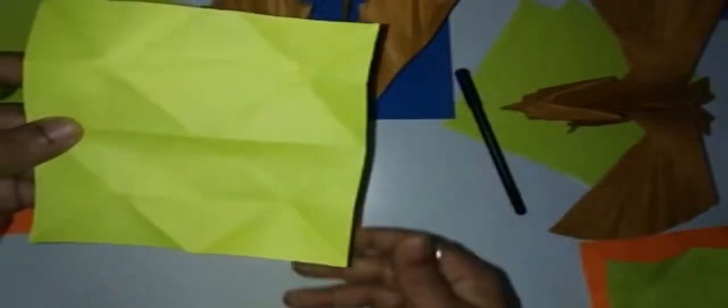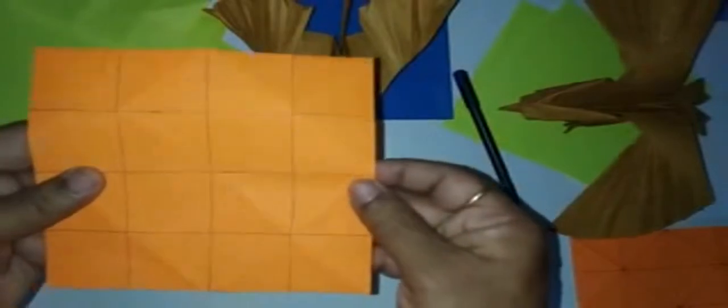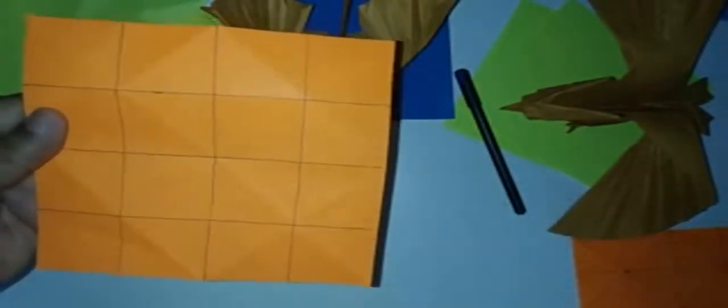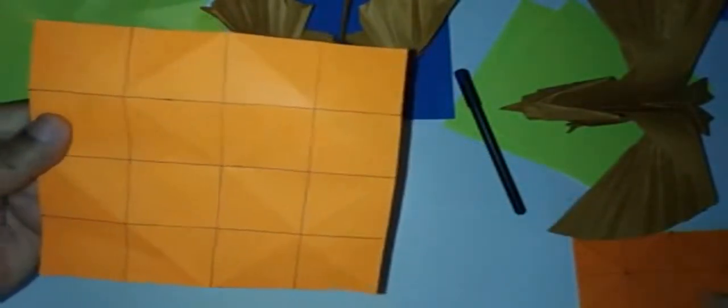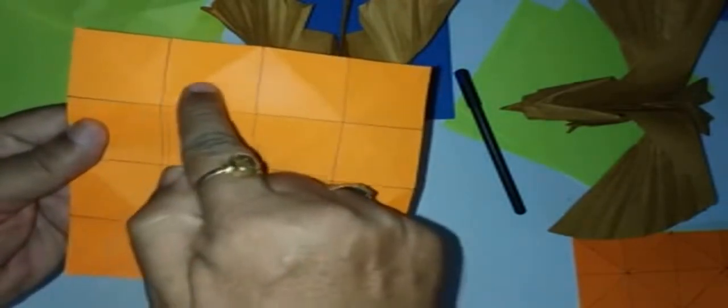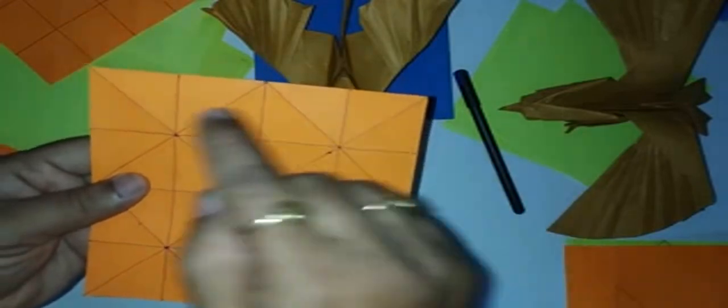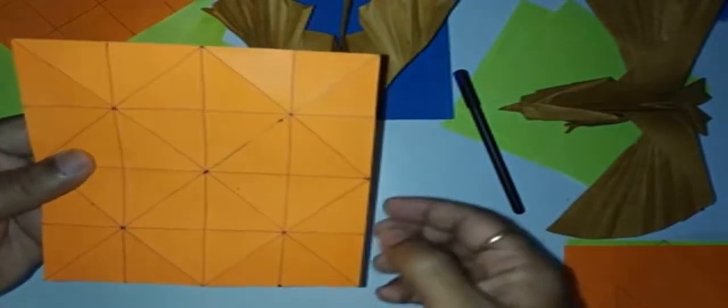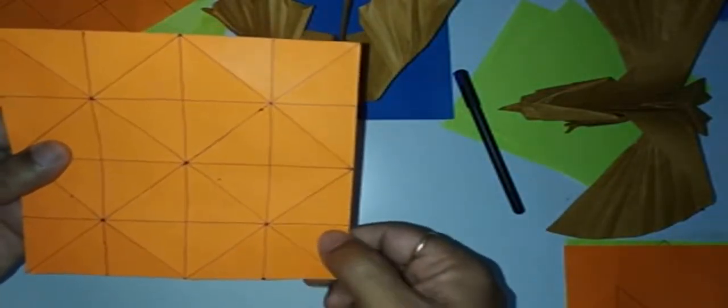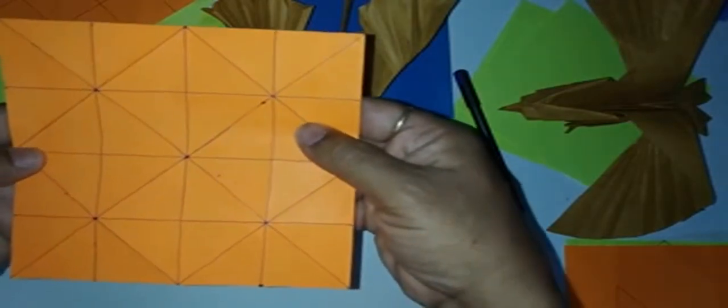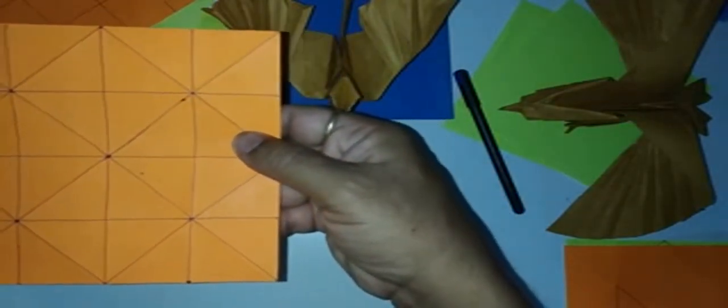You will find 16 squares. You have diagonals to each square. So you will find 1, 2, 3, 4, 32 right-angled isosceles triangles.